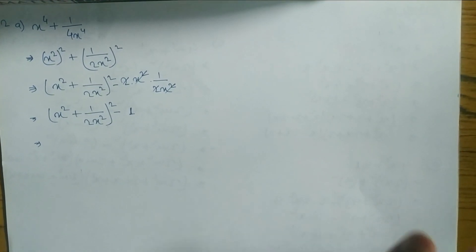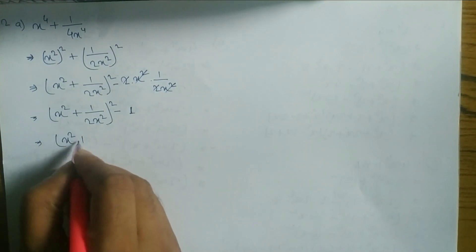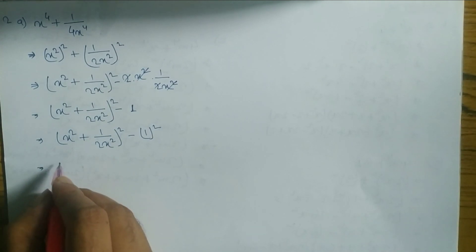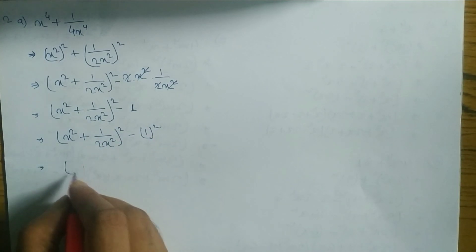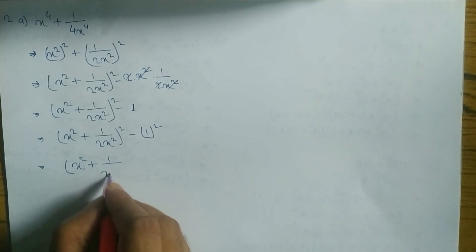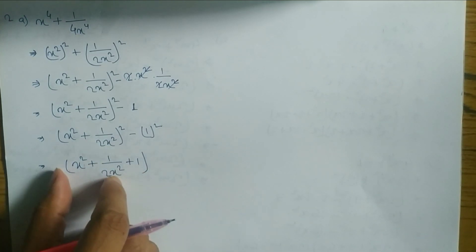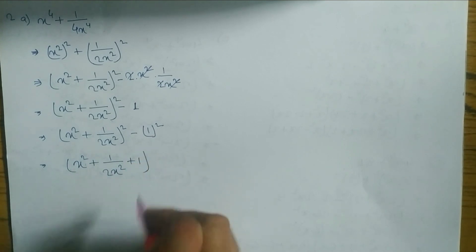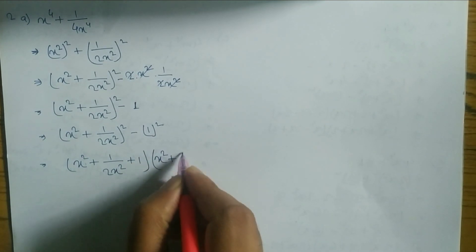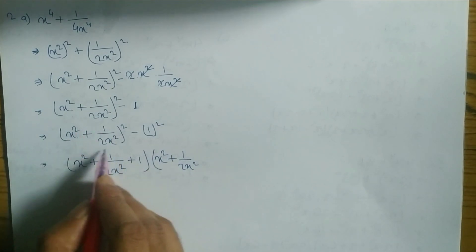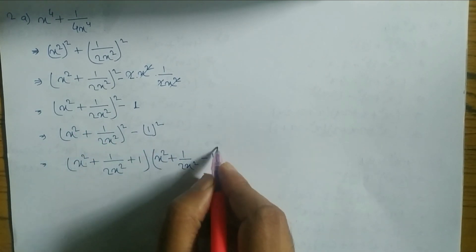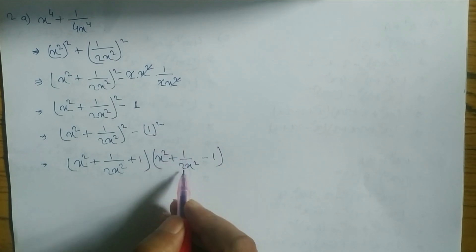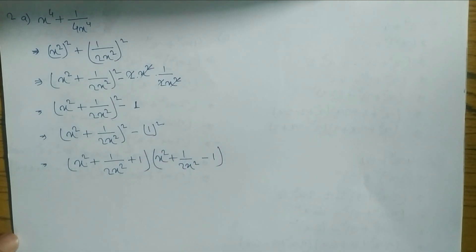Now we convert to a² − b² form: (x² + 1/(2x²))² − (1)². Applying the formula (a + b)(a − b): (x² + 1/(2x²) + 1)(x² + 1/(2x²) − 1). Hope you understand this.